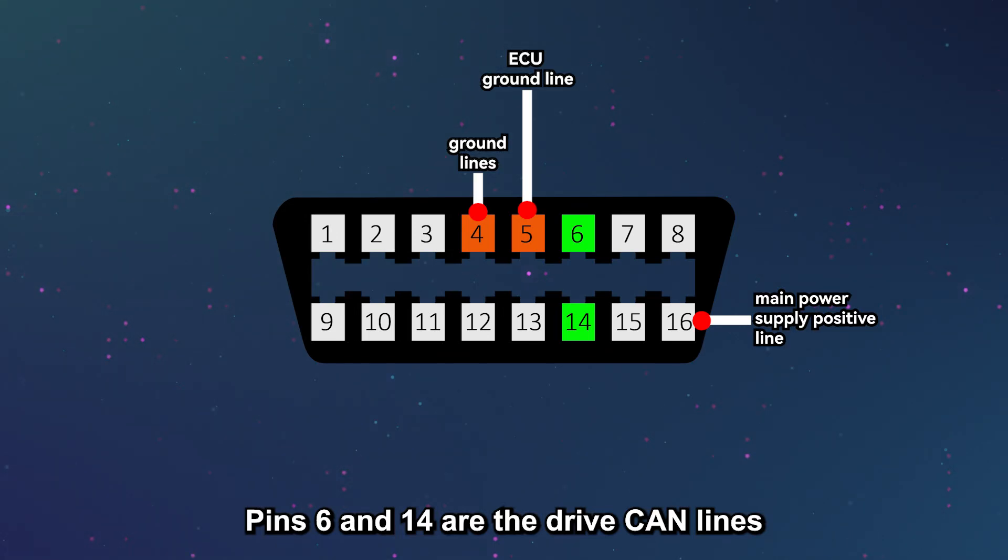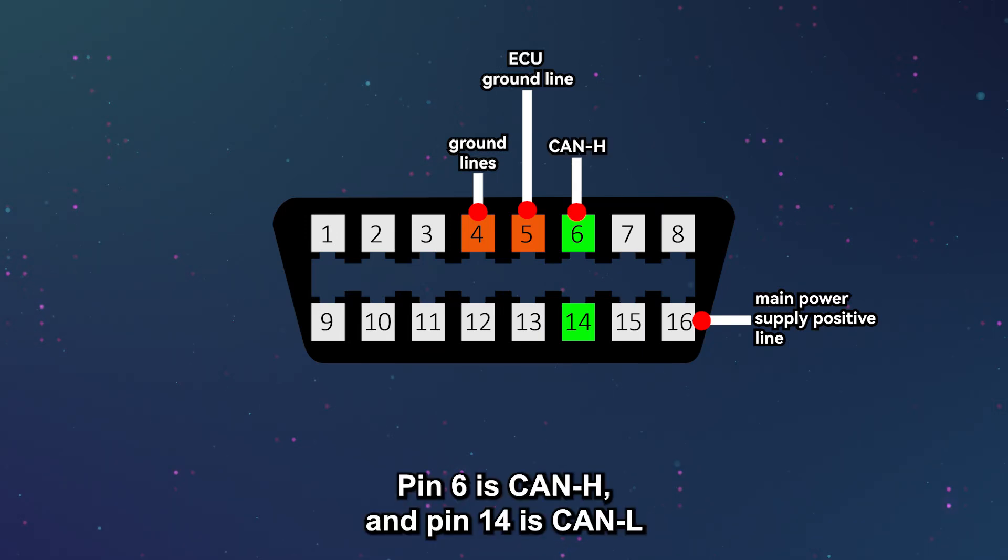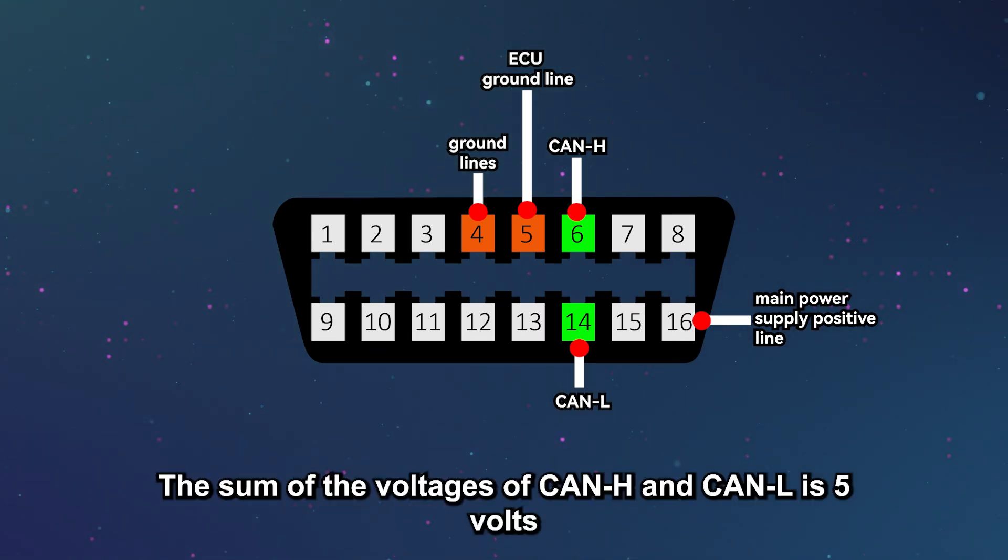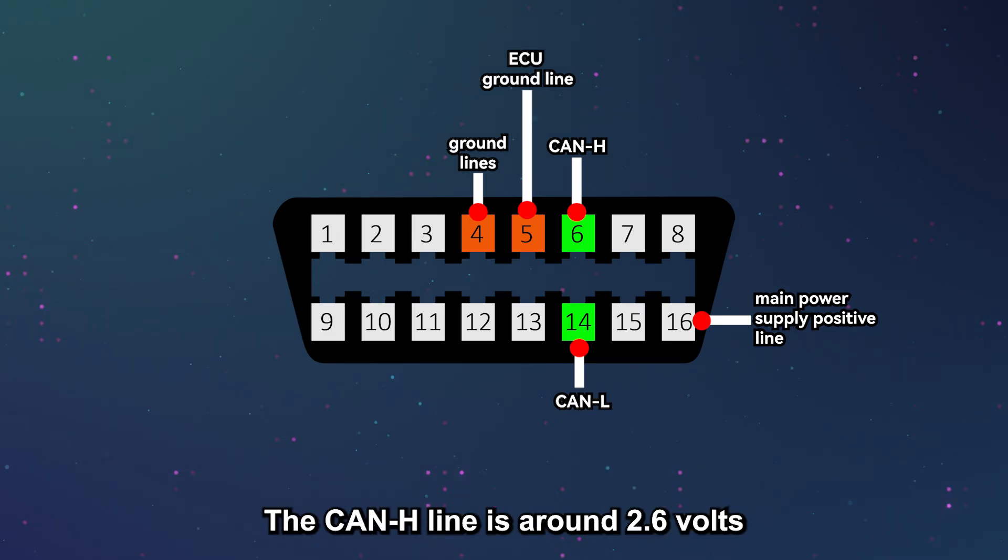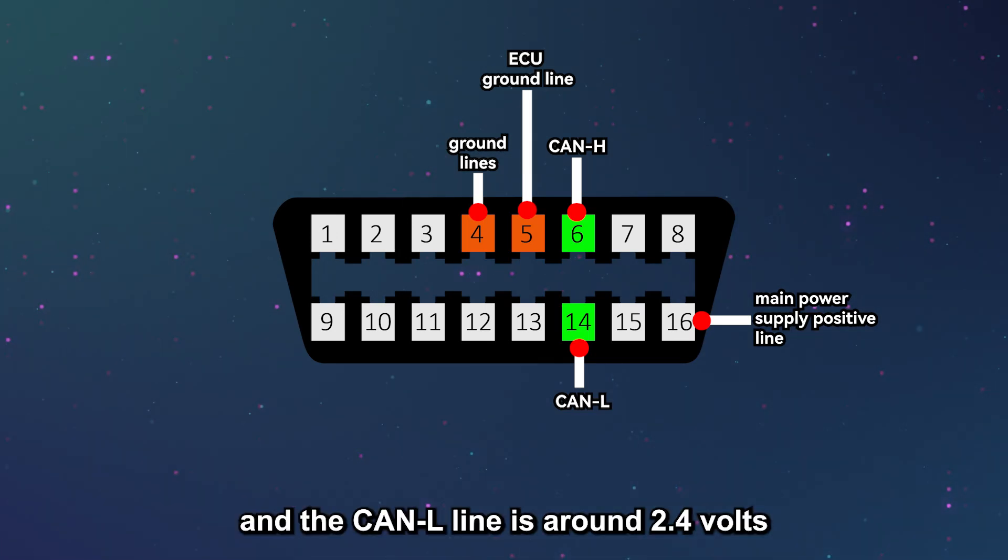Pins 6 and 14 are the drive CAN lines, also known as diagnostic CAN. Pin 6 is CAN-H, and pin 14 is CAN-L. The sum of the voltages of CAN-H and CAN-L is 5 volts. The CAN-H line is around 2.6 volts, and the CAN-L line is around 2.4 volts.